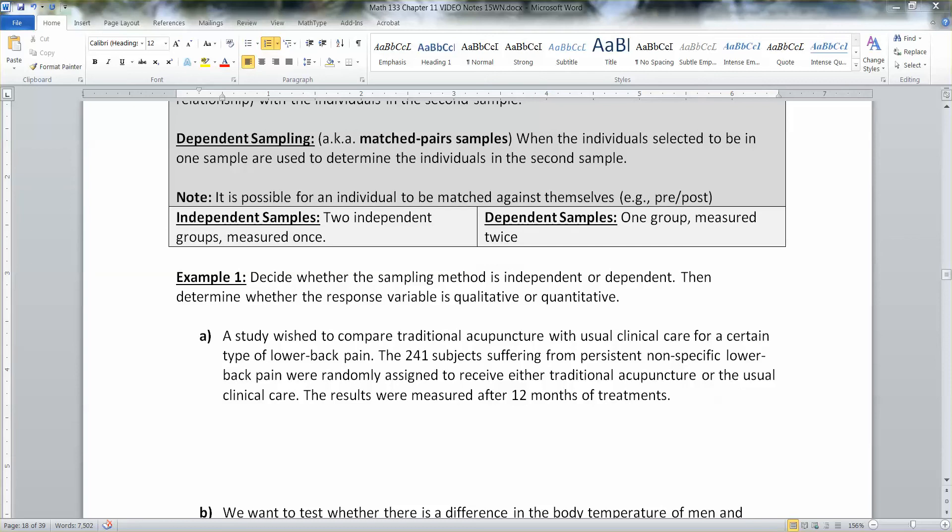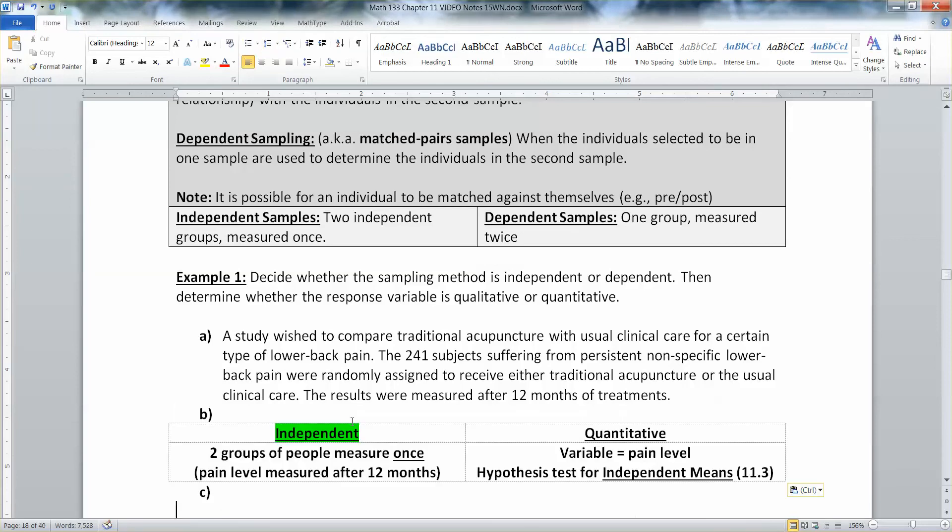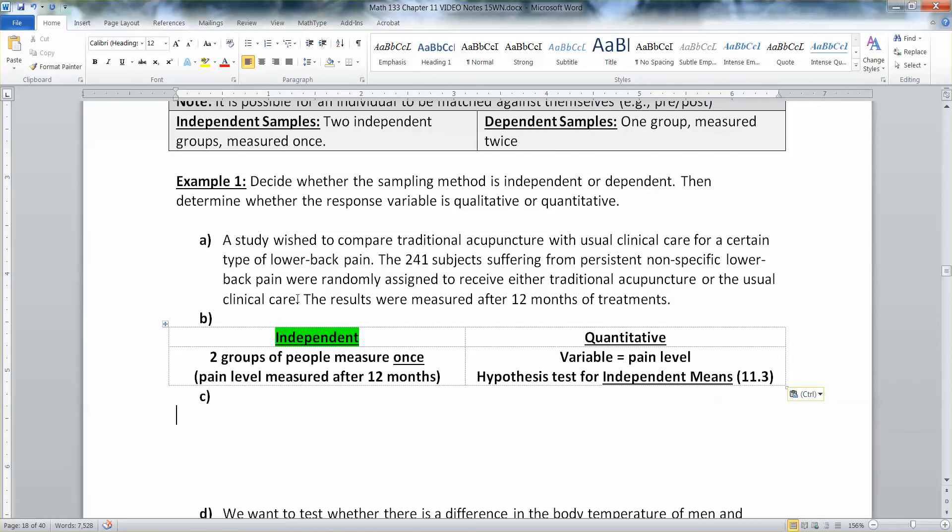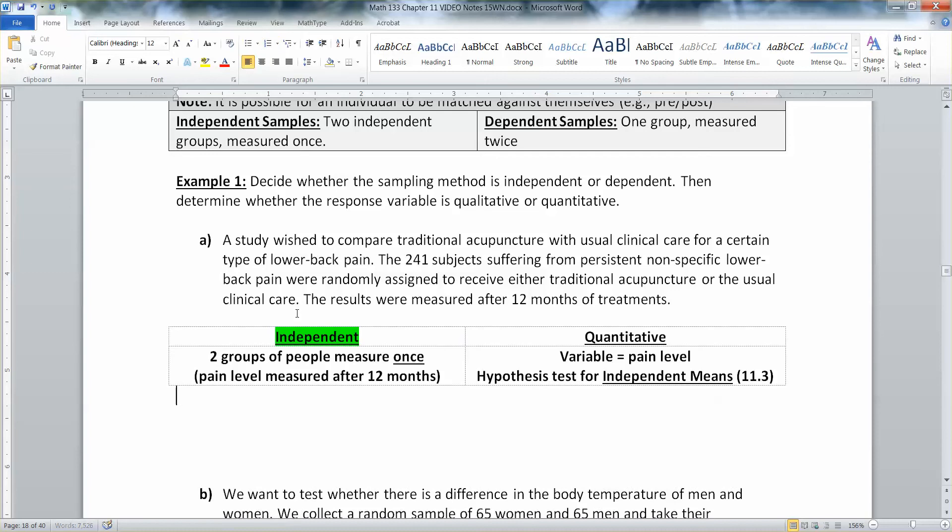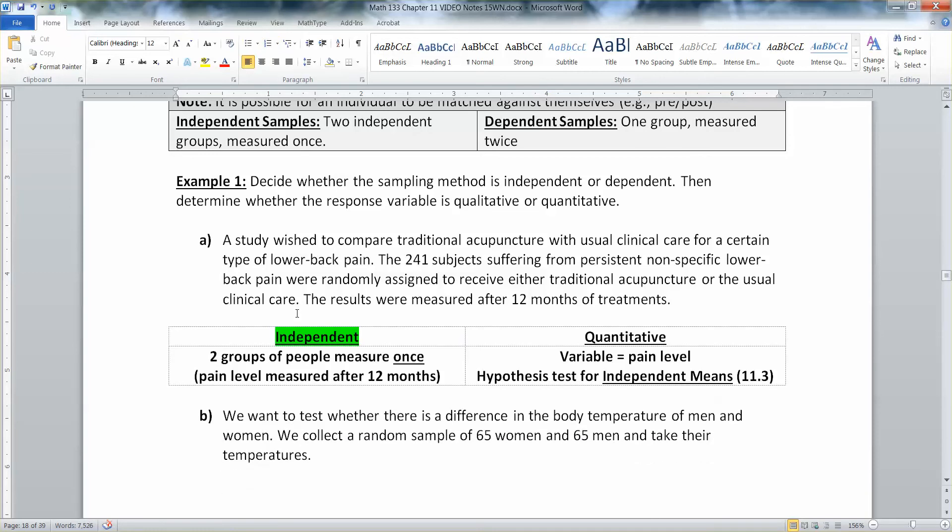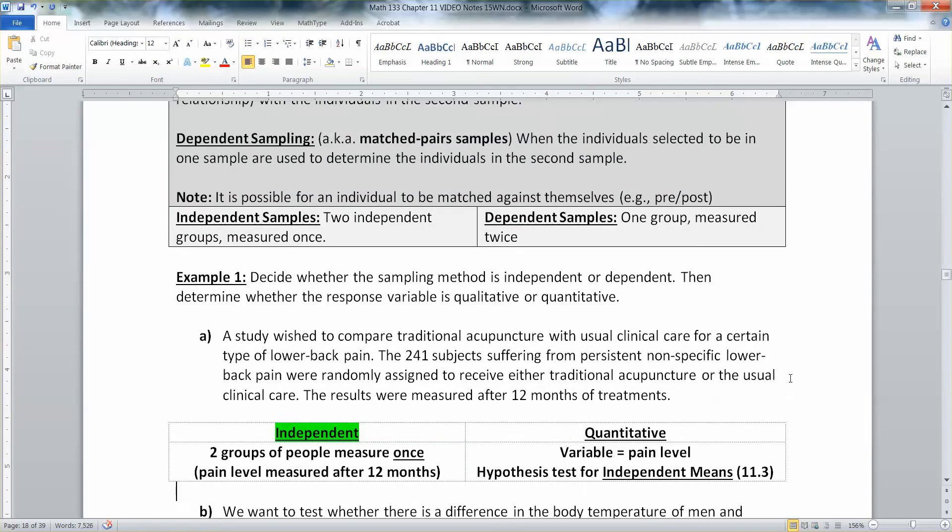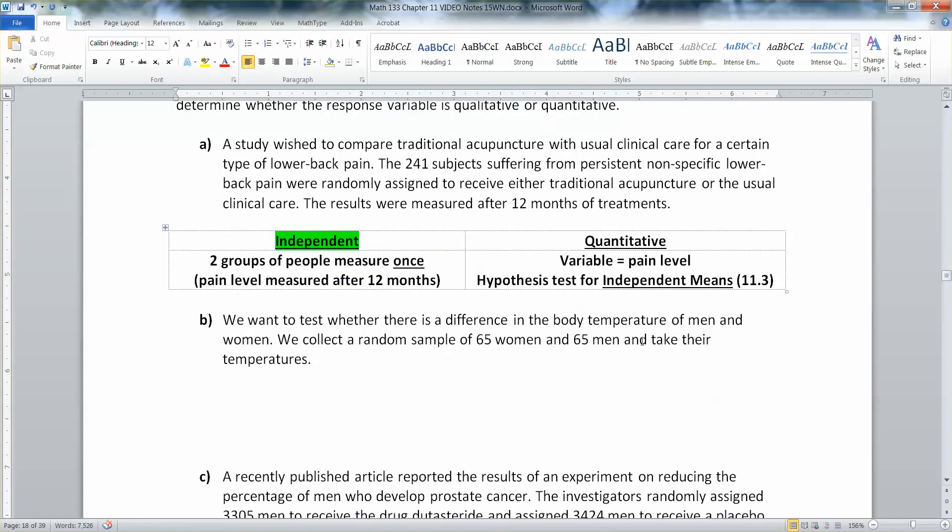And then while we're on the subject, the pain level, that's probably quantitative, right? Because they're probably using something like a pain scale. So we'll say that that's a quantitative variable, which is their pain level. And that would mean that we would be conducting, hypothetically speaking, a test for independent means for this data, which is this section 11.3. If they were dependent, then you'd use the information from 11.2.